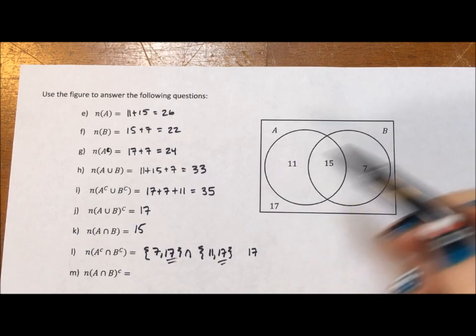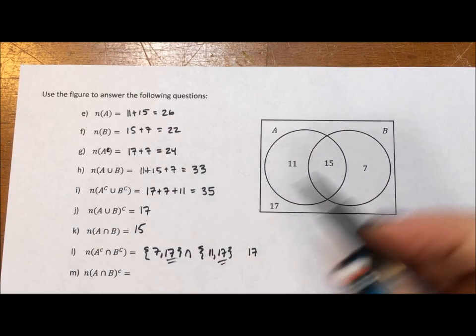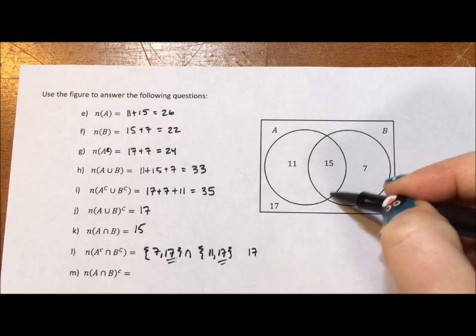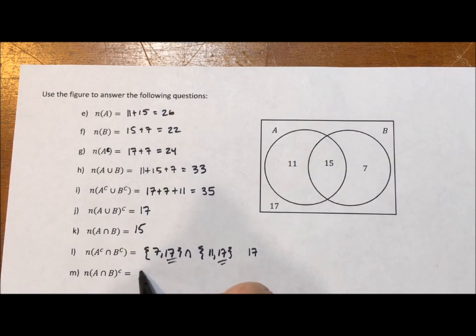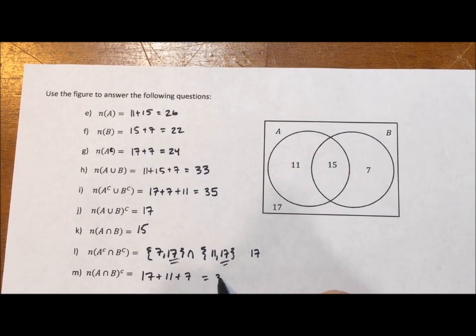And last, we have the complement of the intersection of A and B. Well, the intersection of A and B is this 15. The complement is everything else. So that's 17 plus 11 plus 7, which is 35.